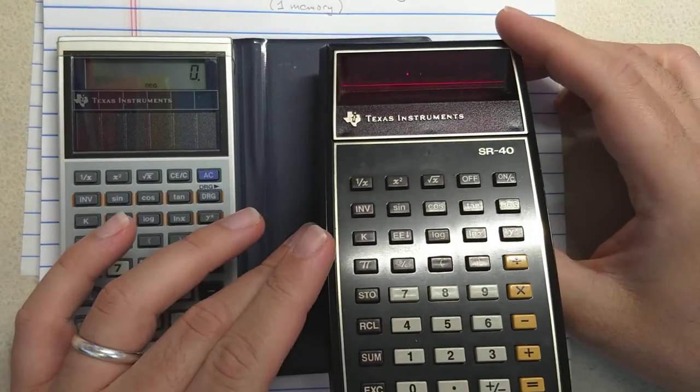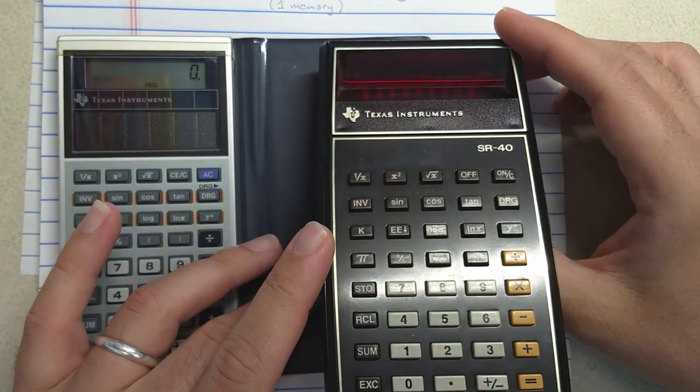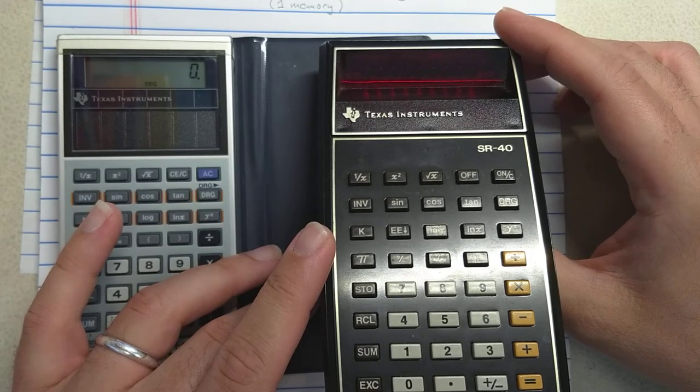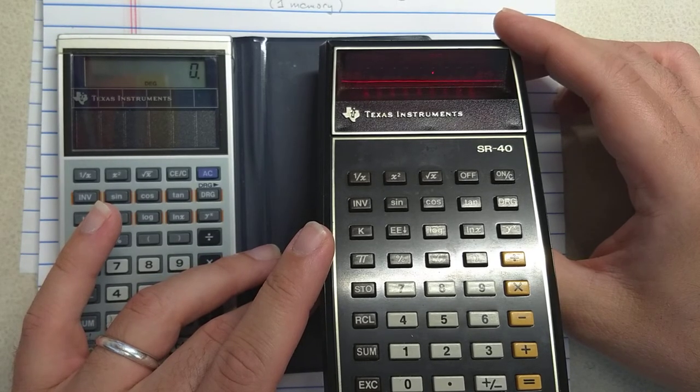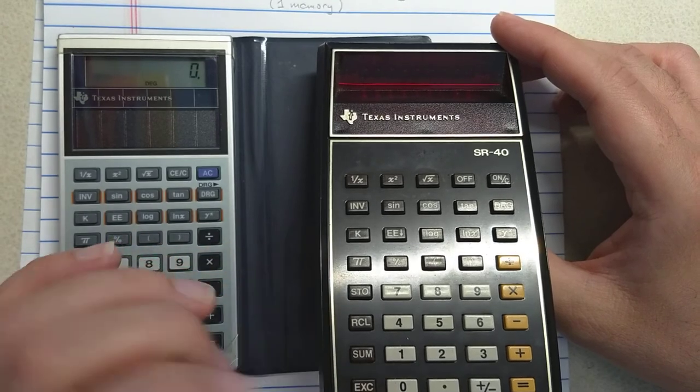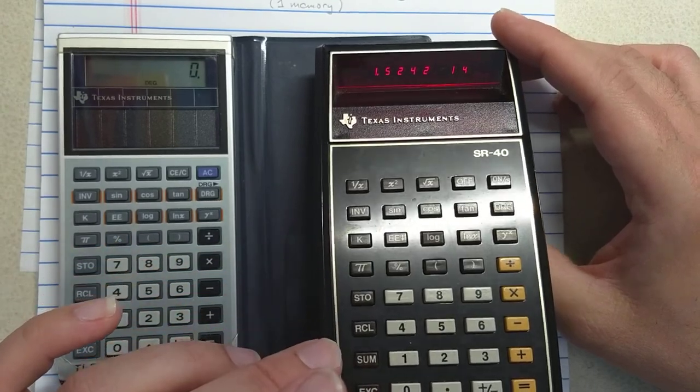You can see the calculator has gone into power save mode. It's got a little running light across there. It does that just to save battery. Let's see. Let's exchange.